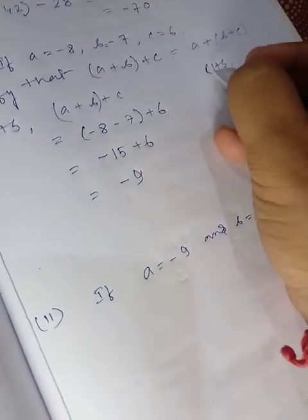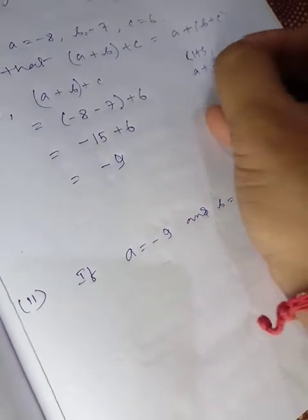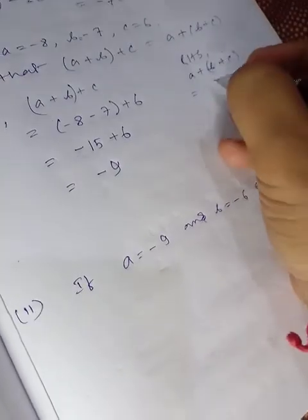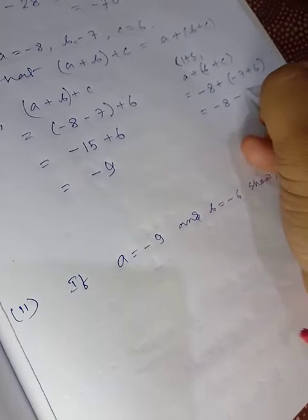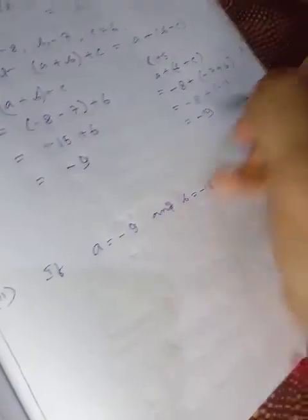Then RHS: a + (b + c). So a equals -8, plus (-7 + 6). -8 plus -1, see, -9.